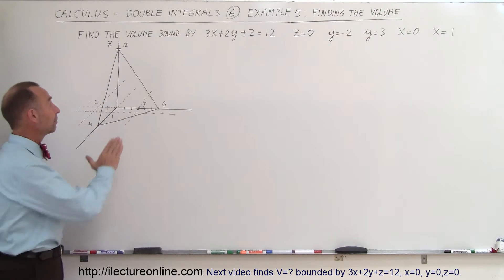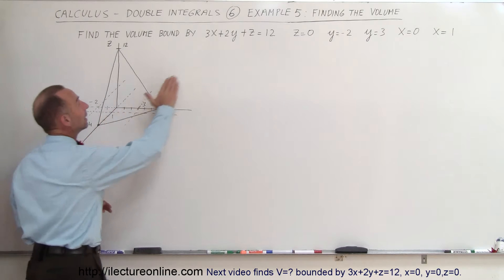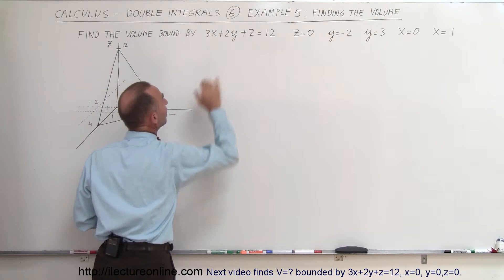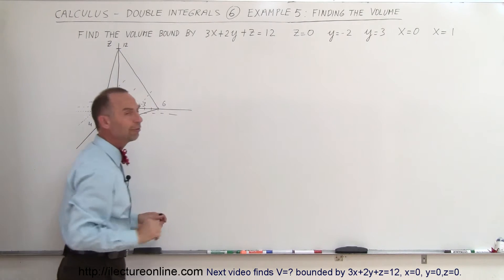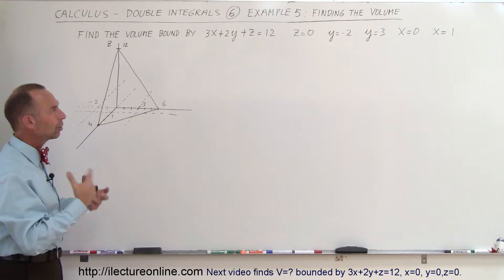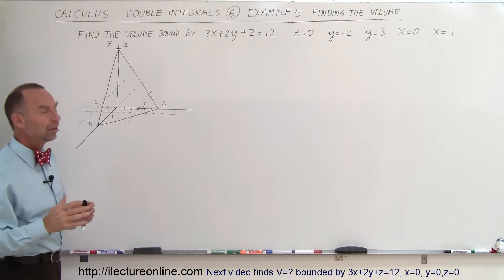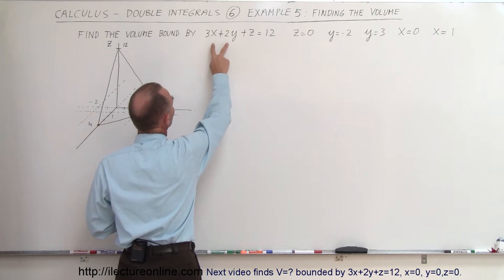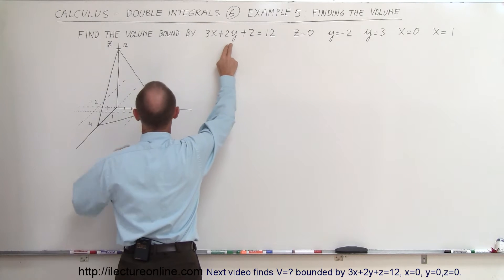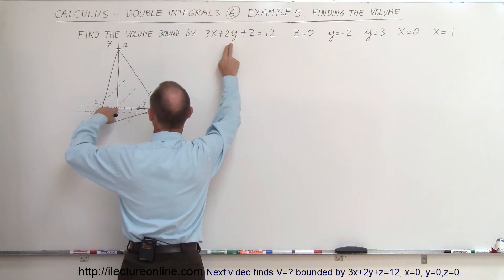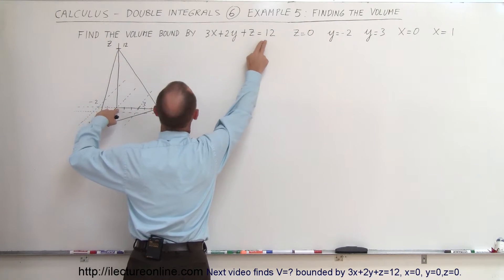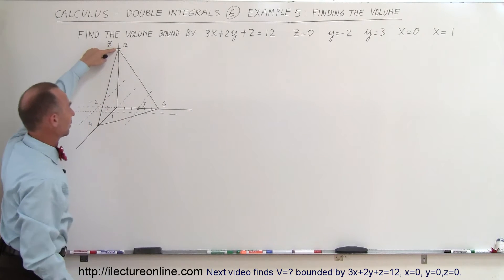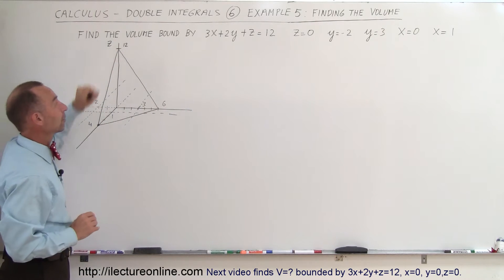The volume is defined by a plane given by 3x plus 2y plus z equals 12. A good way to picture what that looks like is to set two of the variables equal to zero. For example, when x and y equal zero we're at the origin, and z equals 12, which puts us at that point. We know the plane will go to that point.